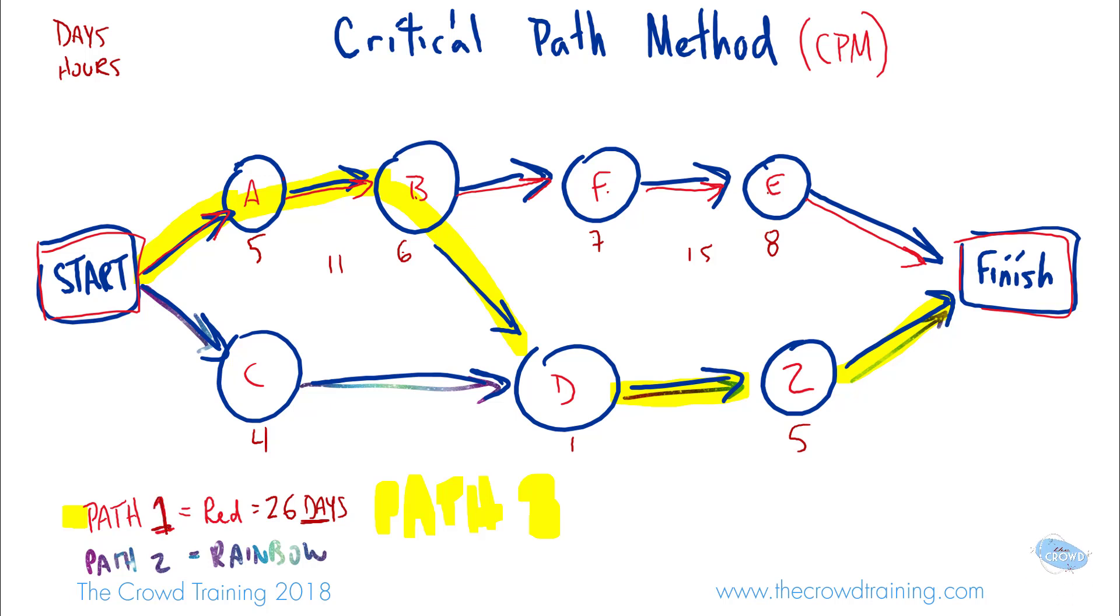Then path two would have four plus one plus five, so that is 10 days. And now when we look at A to B, which is 11, like we had with path one, but now we're going down, so that's one more plus five. So 11 plus six equals 17 days.